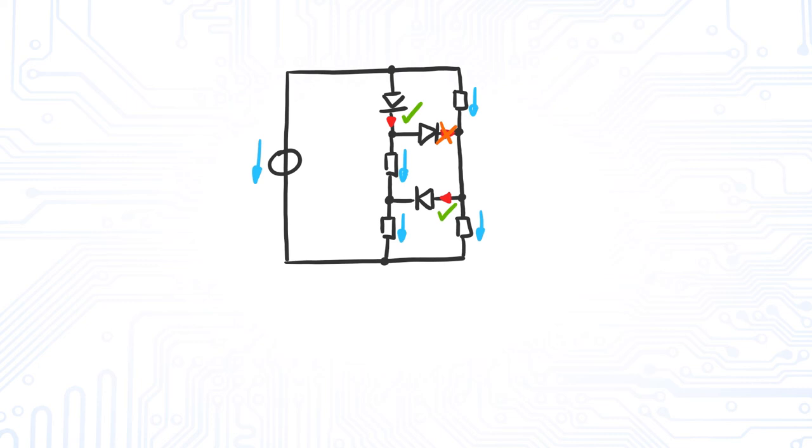Of course, a conducting diode should have a current flowing in forward direction, while a non-conducting diode has a voltage drop smaller than 0.7 volts. If your assumption does not hold for all diodes, simply guess again. You will get the result eventually.